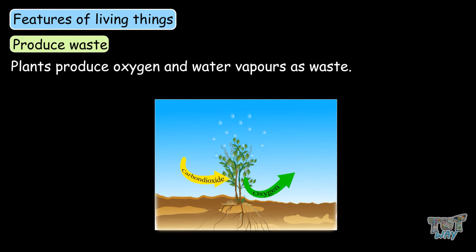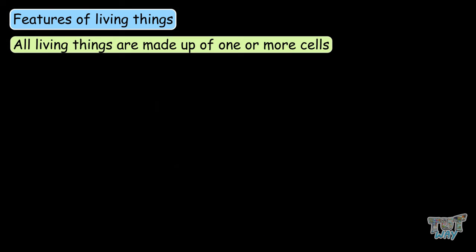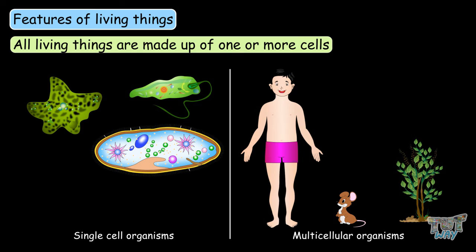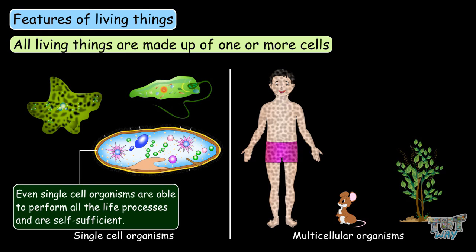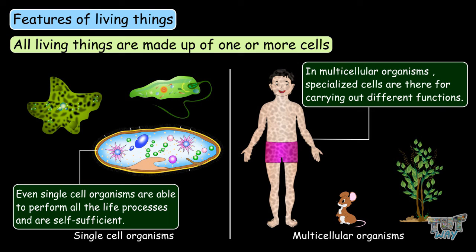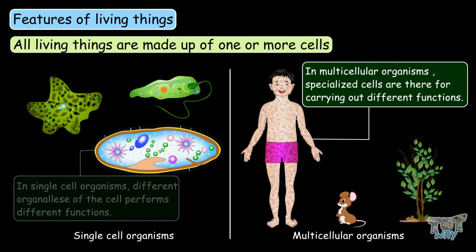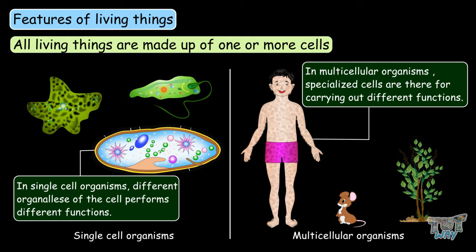The next important characteristic of living things is that all living things are made up of at least one cell — they are made up of only one or more cells. All living things are composed of cells; some are made up of only one cell and some are made up of many cells. Even single-celled organisms are able to perform all the life processes and are self-sufficient. In multicellular organisms, specialized cells are there for carrying out different functions, whereas in single-celled organisms, different organelles of the cell perform different functions.